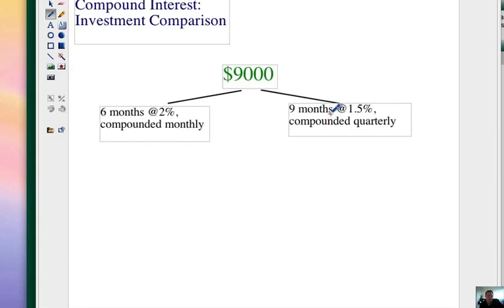Or, I can be a little more patient, put my $9,000 in the bank for, or in my investment for nine months, but it's a little bit lower interest rate, 1.5%. It's compounded quarterly. That's four times a year, every three months. So, I need to put all this information together and figure out what my best deal is.